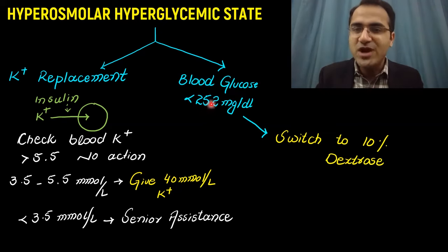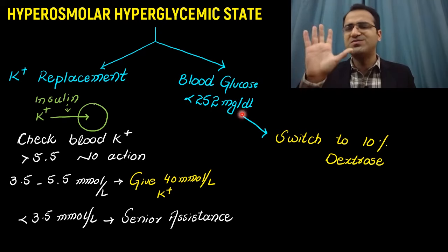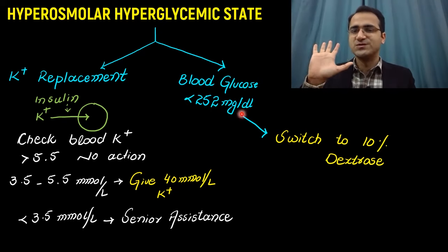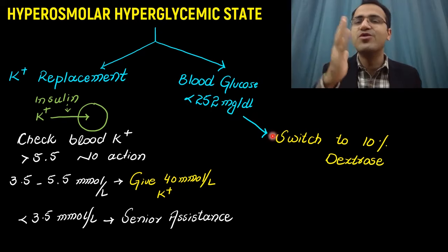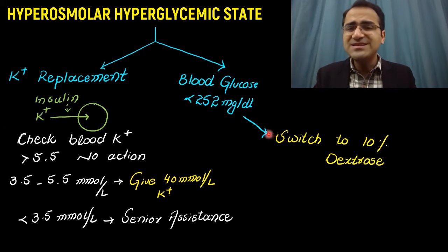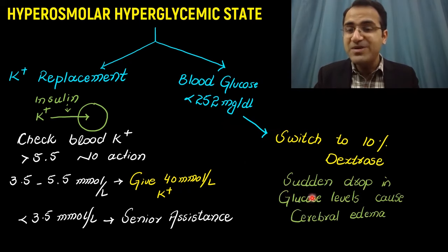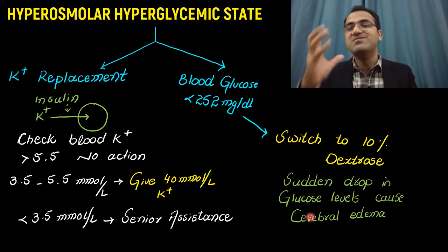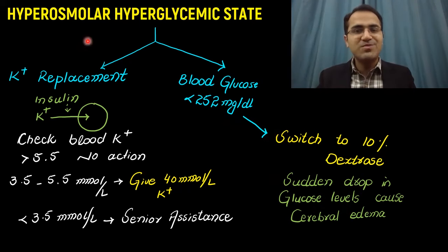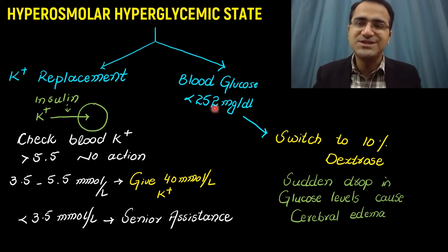When blood glucose levels fall below 252 mg per deciliter, you switch the patient to 10% dextrose, because without dextrose the patient will go into hypoglycemia. Additionally, a very rapid or sudden drop in glucose level can precipitate cerebral edema, so you maintain a loose mark for glucose levels. You replace potassium and give dextrose when blood glucose is less than 252 mg/dL.